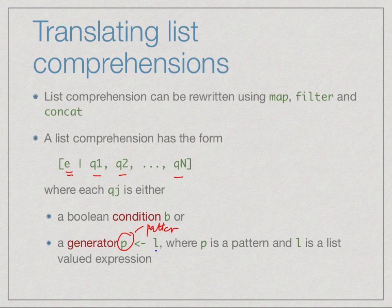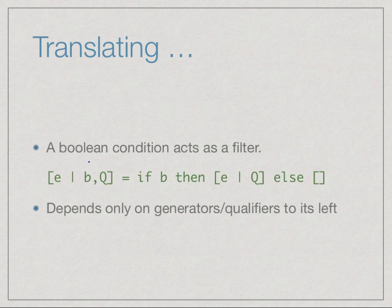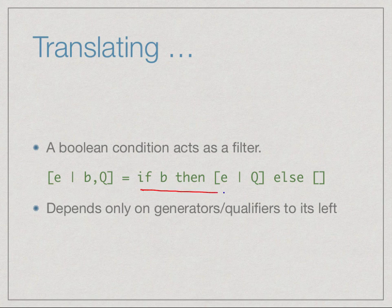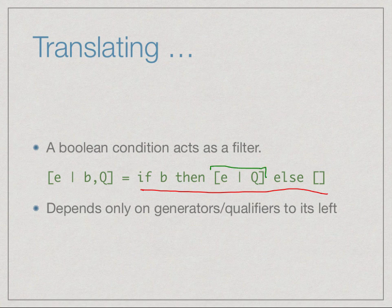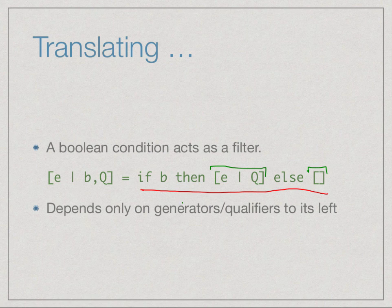We can have either a generator 't <- l' or a boolean condition 'b'. When we apply a condition b, it applies to things generated before it, acting as a filter. An expression of the form 'e | b, q' can be written using if-then-else: if b is true then continue processing, otherwise skip it. So for each element generated on the left, if the element satisfies the condition we continue to process it using what remains; otherwise we drop it.